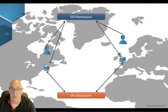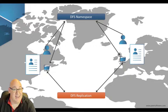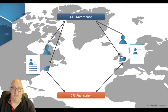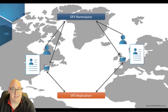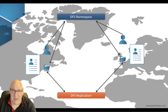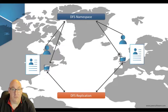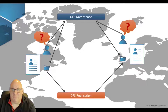But what happens when users in New York are working on the files at the same time as the users in London? DFSR is replicating newly created and changed files between the two locations. All too often you would have a situation where a New York user and a London user are both editing their local copy of a file at the same time — and this creates a version conflict. Whose modification should overwrite whose?